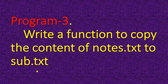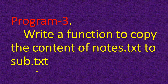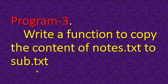The next program is to write a function to copy the content of notes.txt to sub.txt. There are two methods. The first is to open notes.txt in read mode and sub.txt in write mode, then read the content from notes.txt and write it into sub.txt. The second method is to rename the file and delete the original one — you create a temporary file by importing the OS module. Use the first method when content is small, and the second when content is large.